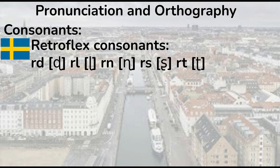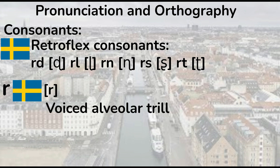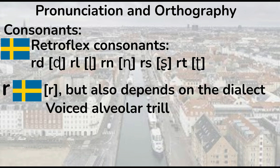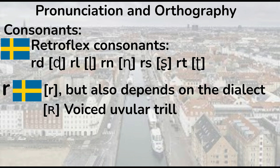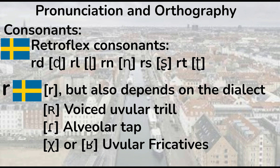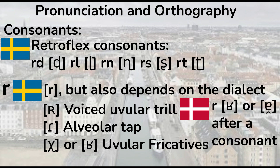There are also retroflex consonants, spelled with r before the letter. And speaking of r, it's normally pronounced as r, a voiced alveolar trill, but this also depends on the dialect. It can be a voiced uvular trill, an alveolar tap, or uvular fricatives, voiced or unvoiced. In Danish, the r sound is mainly a voiced uvular fricative, or pronounced as a vowel after a consonant.